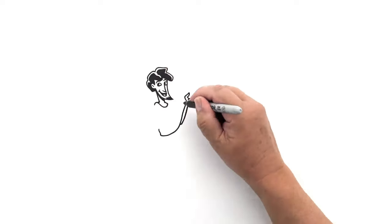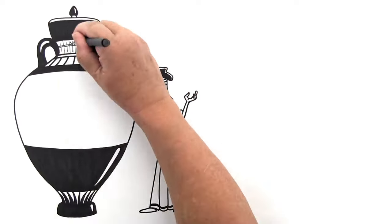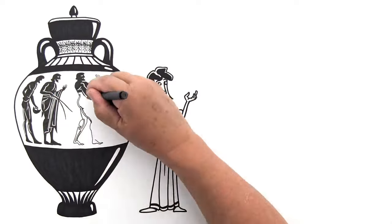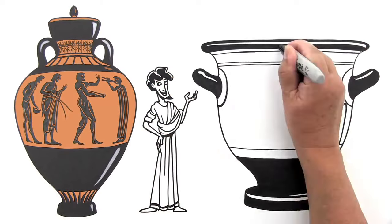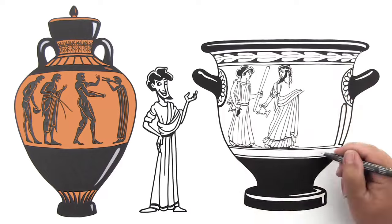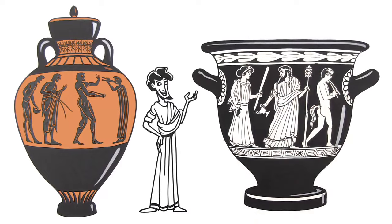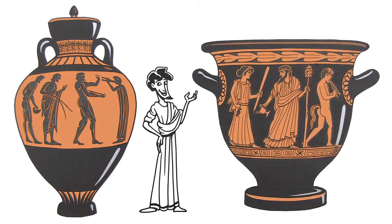Greek pottery styles changed as well. They created the popular black figure ware style, which showed black figures on red pots. And then they reversed the formula into another popular style called red figure ware, showing red figures against a black background.